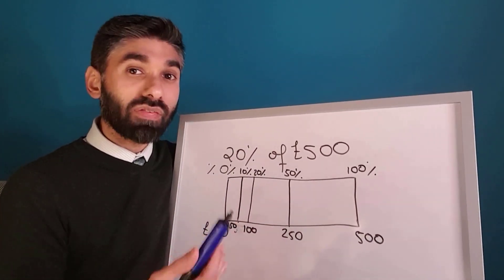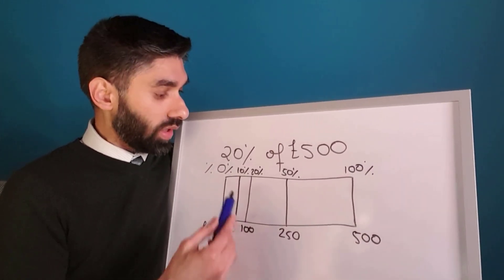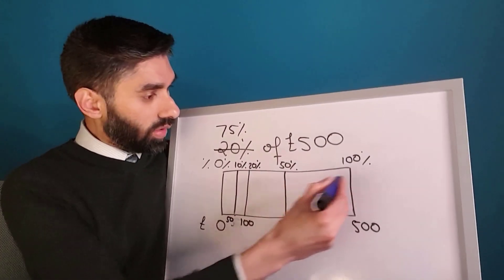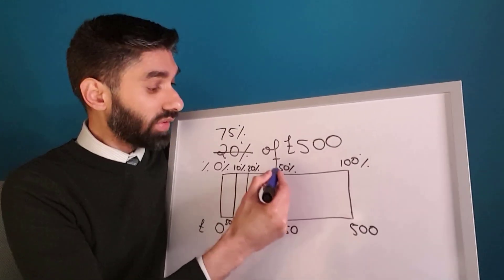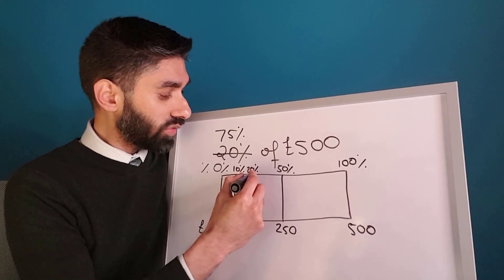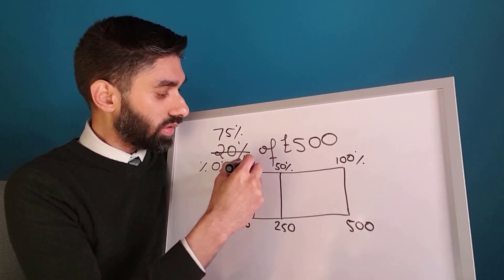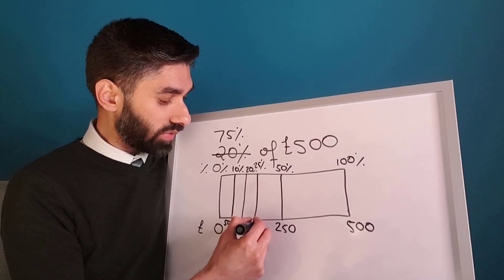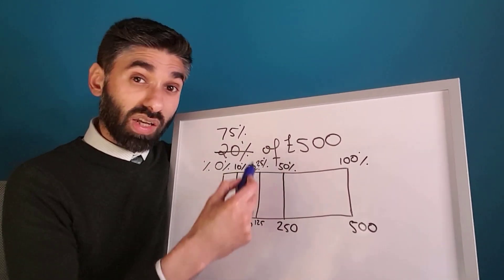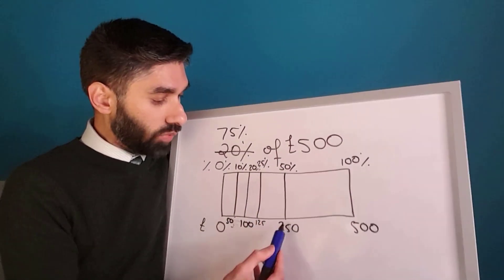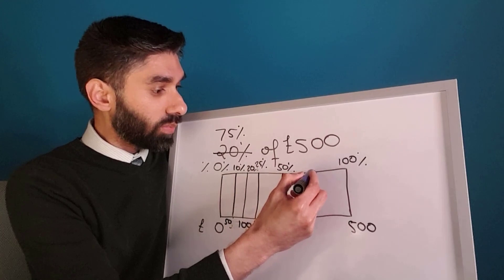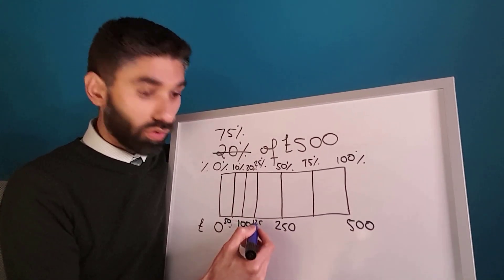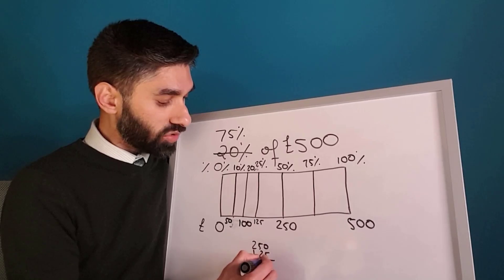Now let's try something harder — finding 75%. Half of 100% is 50%, which is £250. Half of 50% is 25%, and half of £250 is £125. On the bar, 50% + 25% = 75%. So 75% = £250 + £125 = £375.